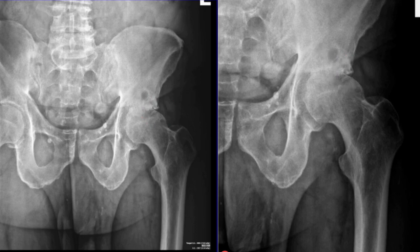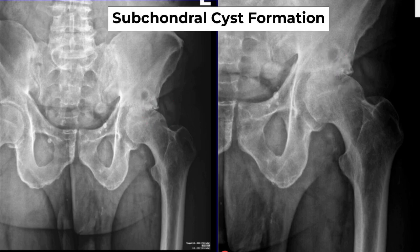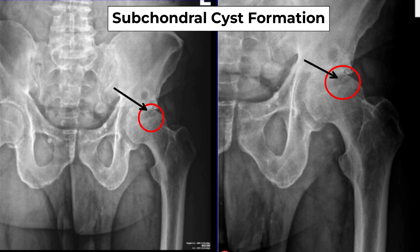We also look for subchondral cyst formation. This is when joint fluid forces itself between cracks in the bone and forms these small pits in the weight-bearing surface of the bone, which is also a hallmark of osteoarthritis.